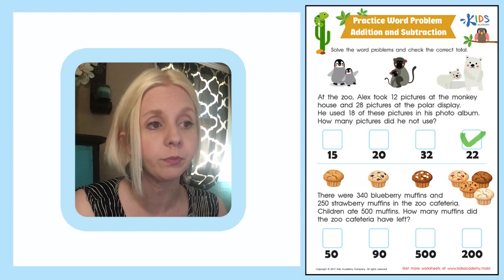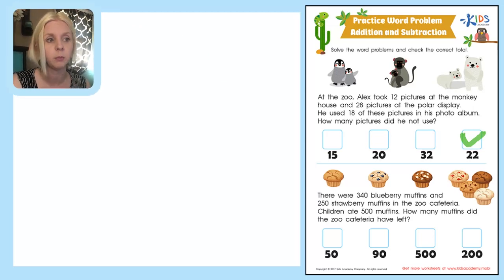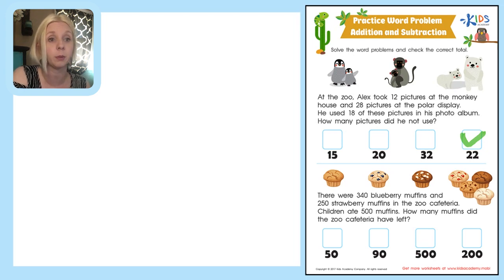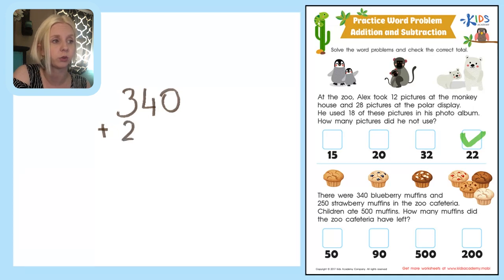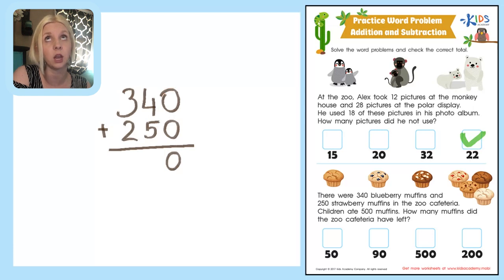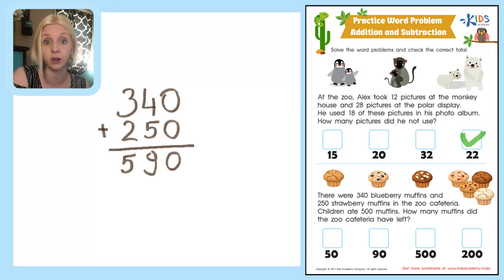We need to find the total number of muffins — blueberry plus strawberry — and then subtract 500 to find how many are left. So we write 340 blueberry muffins plus 250 strawberry muffins. 0 plus 0 is 0. 5 plus 4 is 9. 3 plus 2 is 5. So the total number of muffins in the cafeteria was 590.